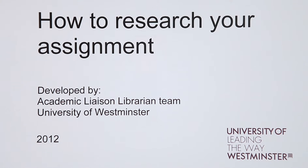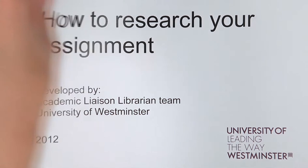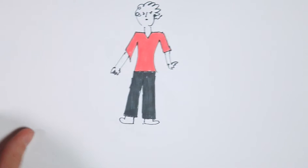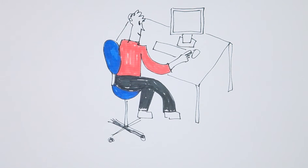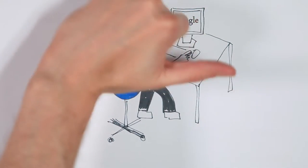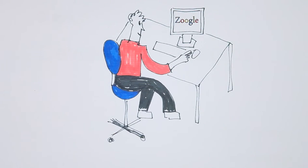Today we're going to look at how to research your assignment in three stages. This is Dave. He's researching his assignment and starts by typing his essay title into his favorite search engine. This is the bad way of doing research. We can show Dave the good way.